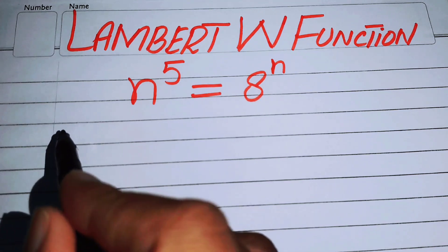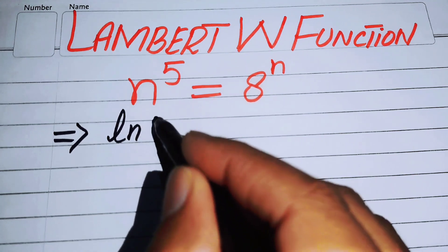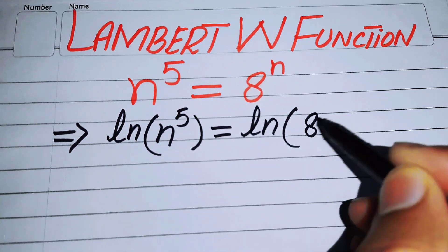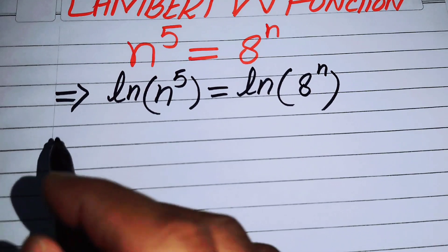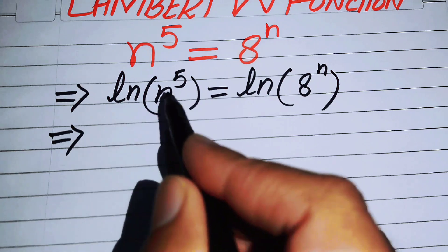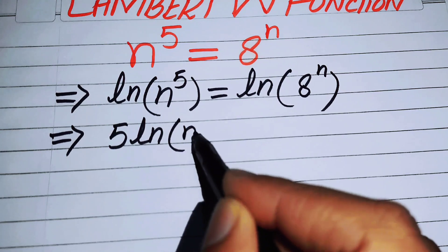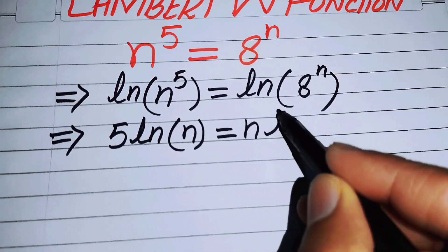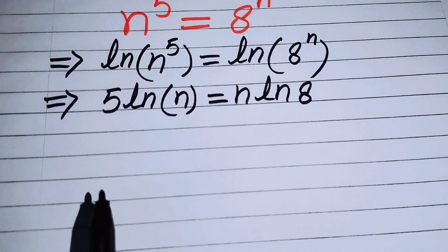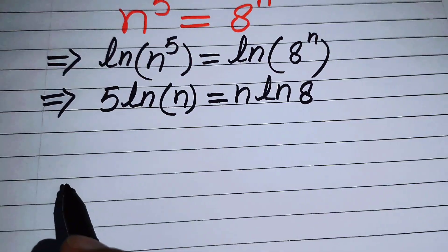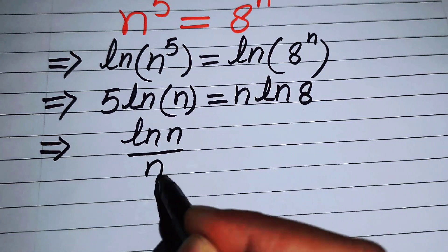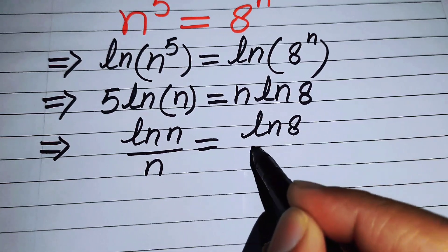The very first thing we are going to do is take the natural log on both sides. You get log of n to the power of 5 equals log of 8 to the power of n. Using the properties of logarithm, we move the exponents to the front, obtaining 5·log(n) = n·log(8). Then we rearrange to get log(n)/n = log(8)/5.